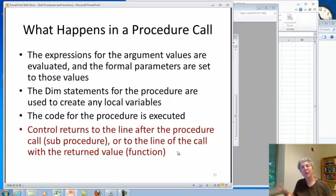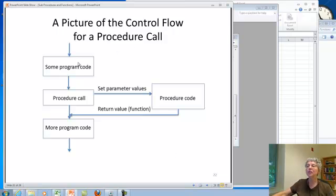Now, what happens when you call a procedure or a function, is that the expressions for the argument values are evaluated. And, the formal parameters are set to those values. Then, we go into the body of the code. The DIM statements are used to create any local variables. The code for the procedure, whether it's a sub procedure or function, is executed. And, then control returns back to where the call was. Either the line after the call, if it was a sub procedure. Or, the line where the call occurs, if it was an expression. So, here's a flow chart that shows you that. We have some program code. And, we hit a procedure call. We set the parameter values. And, we go off to wherever in the code that procedure is to do the call. And, then we return our value back where we were. And, continue.